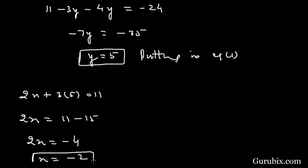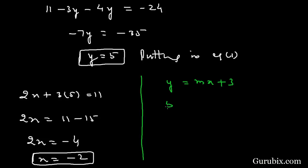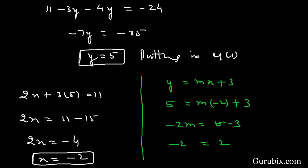Now we have to find the value of m for which y equals to mx plus 3 is satisfied. We have y equals to 5, x equals to minus 2, and the equation gives 5 equals to m times minus 2 plus 3. This means minus 2m equals to 5 minus 3, which is 2, therefore m equals to minus 1.